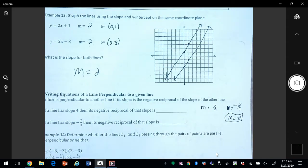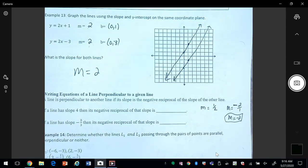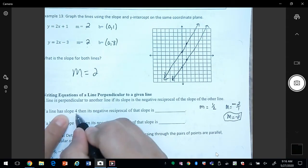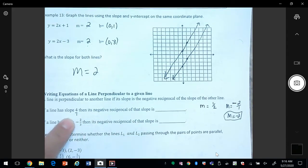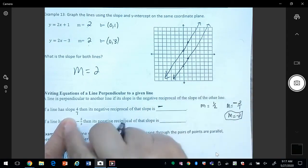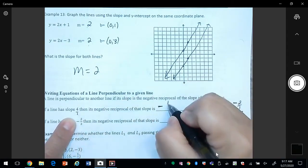If a line has slope four, then the negative reciprocal of that slope—if this is four, there's really a one under it—and so we're going to have the negative, flip the fraction here, so we get negative one fourth.